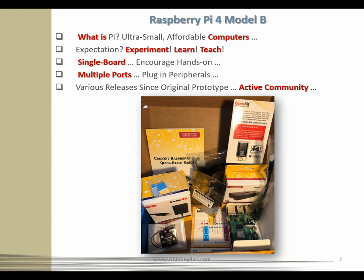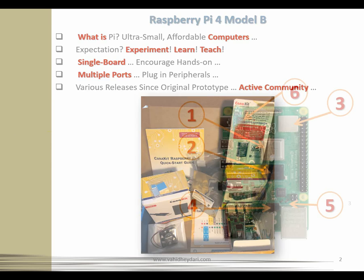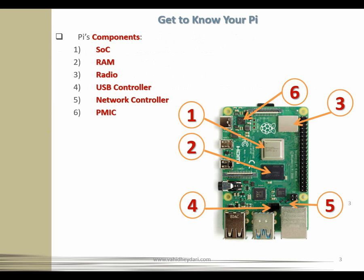Let's get to know our Pi by looking at its components. We have six main components. The first is called SoC, or System on a Chip. It is covered in a metal cap, and under that cap what we have is a silicon chip also known as an integrated circuit or IC. This IC contains the bulk of the Pi's system, including the CPU — the brain — and also the GPU, or graphics processing unit, which is there to handle the visual side of things.